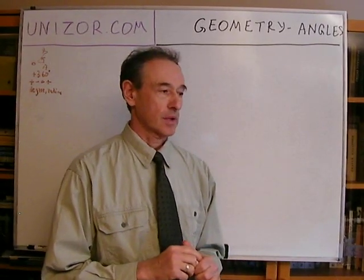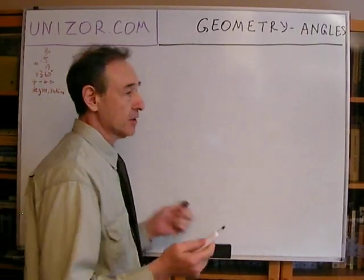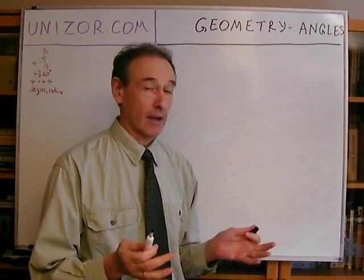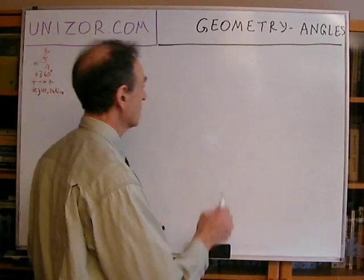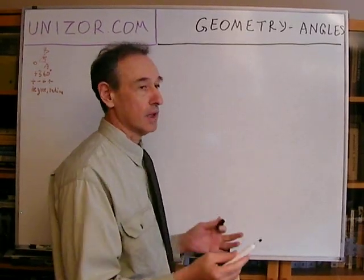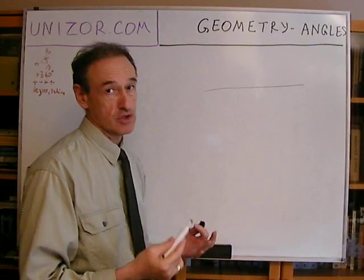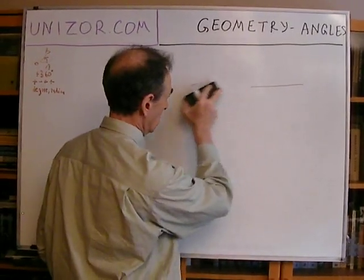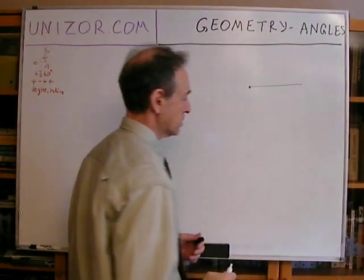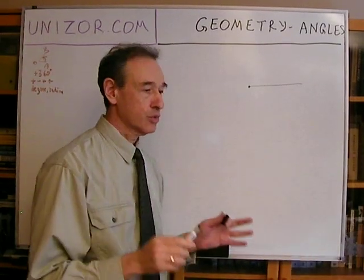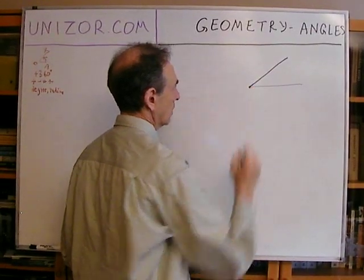First of all, let's talk about the definition. Everybody knows basically how angles look, but let's start from the very fundamentals — the definition. We all know what a straight line and a ray are; a ray is actually a half line. It starts at a certain point and then goes to infinity. Two rays which share the same beginning form an angle.